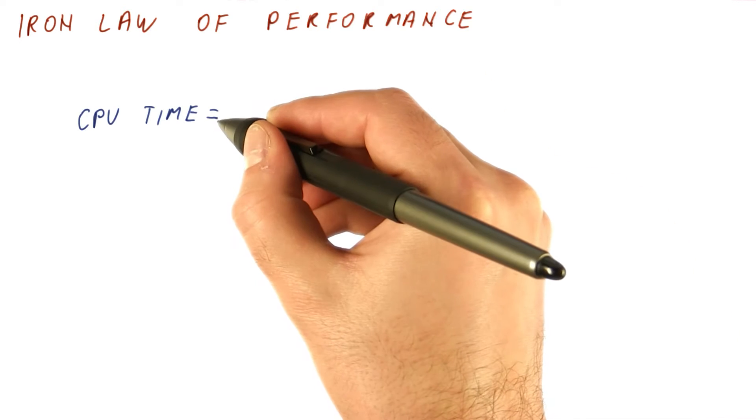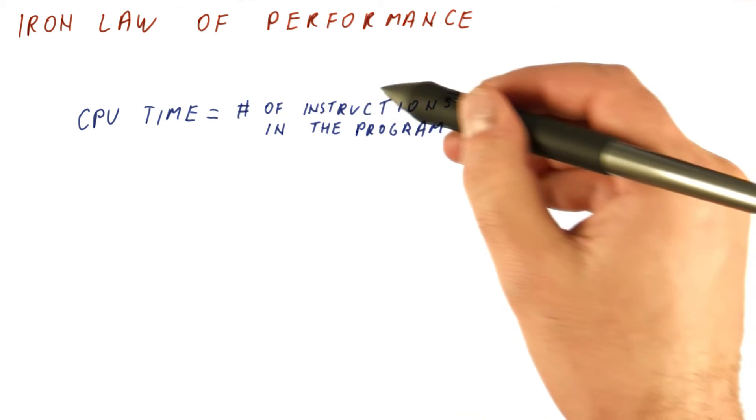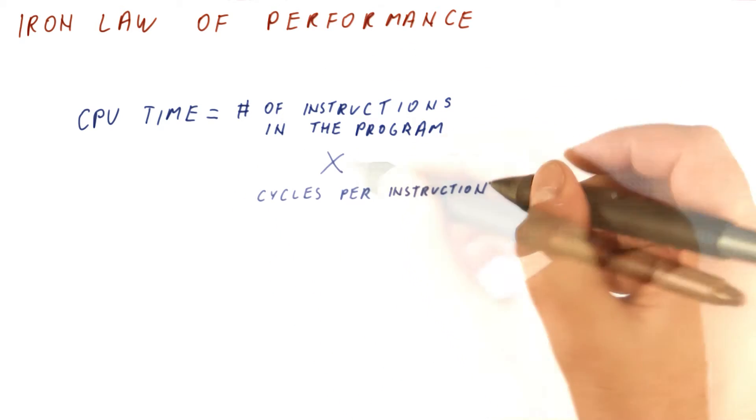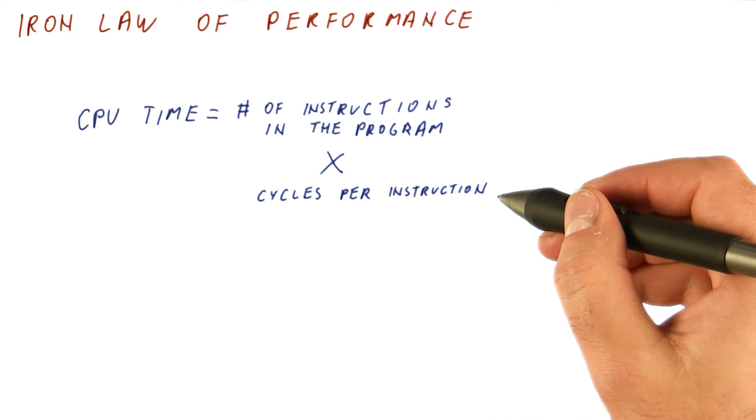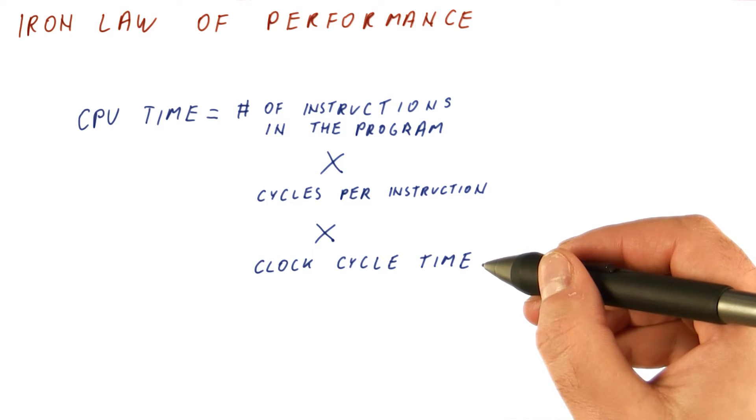So the processor time can be expressed as the number of instructions per program times the number of cycles we spend per instruction times the clock cycle time, or the number of seconds per clock cycle.